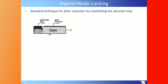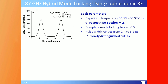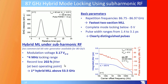Briefly on hybrid mode locking: using sub-harmonic RF injection, we generated repetition frequencies around 87 GHz — the fastest two-section mode-locked laser demonstrated. Complete mode locking is achieved below minus 5 V, with pulse widths ranging from 1.4 to 3.1 ps and a record low jitter. This is the first hybrid mode-locked laser above 43.5 GHz, surpassing all previously published values.